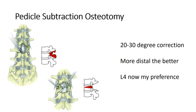With the pedicle subtraction osteotomy, we can expect a 20 to 30 degree correction. We accept that the more distal level — in other words L4 — is better. Although many of us performed it at L3 in the past, mostly now L4 would be our preference.